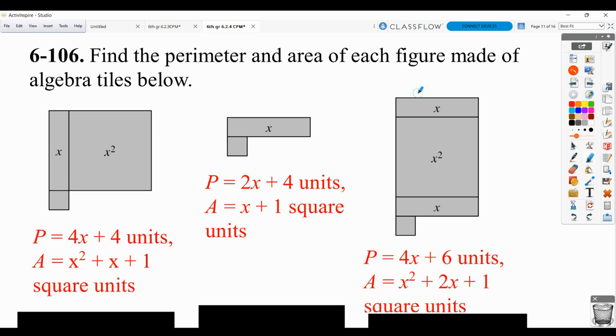And perimeter, this has a length of x. This has a length of x. This has a length of x. And then this combined with this makes a length of x. And unit lengths are here, here, here, here, here, here, and here. So that's how we get the 4x plus 6.